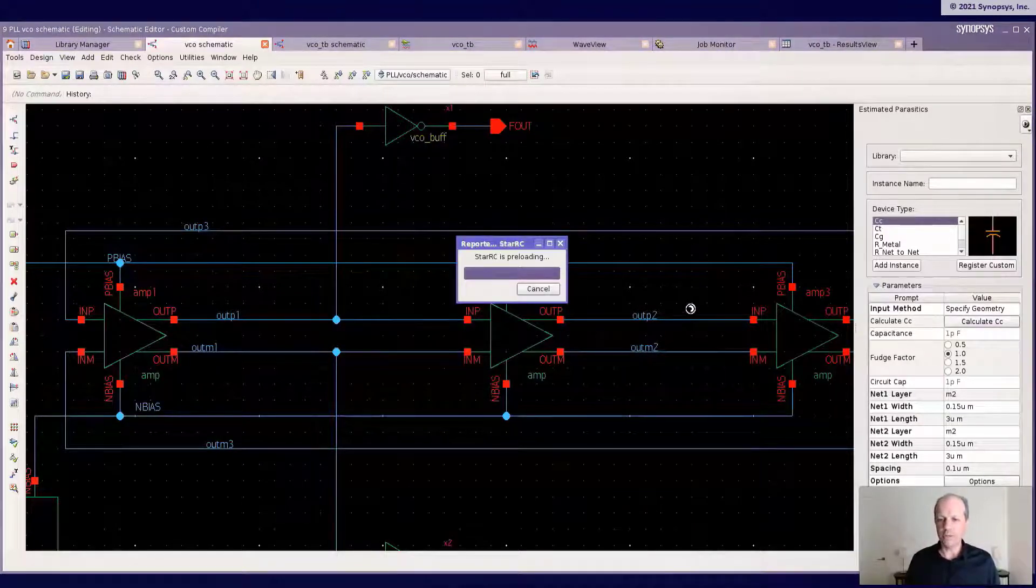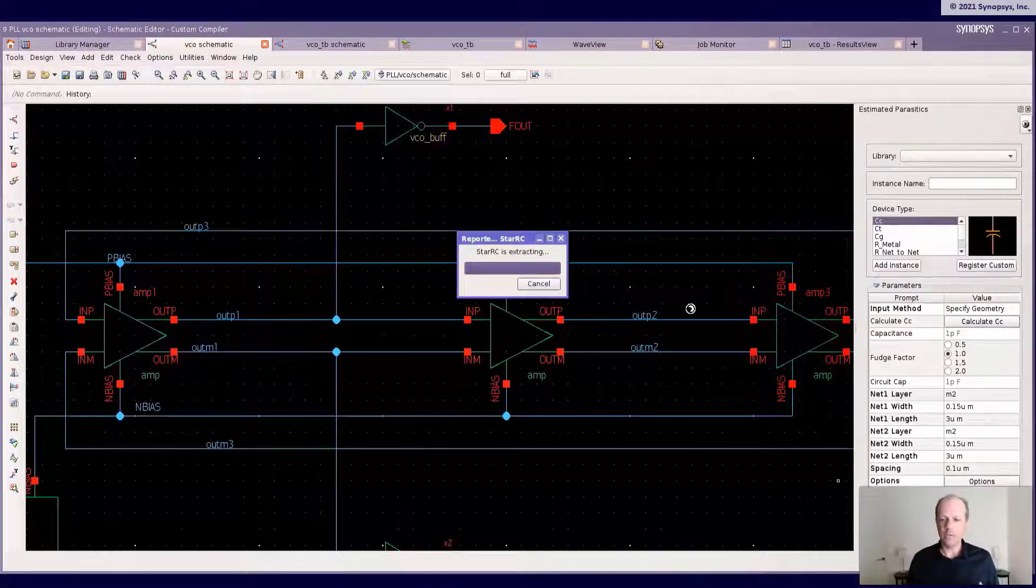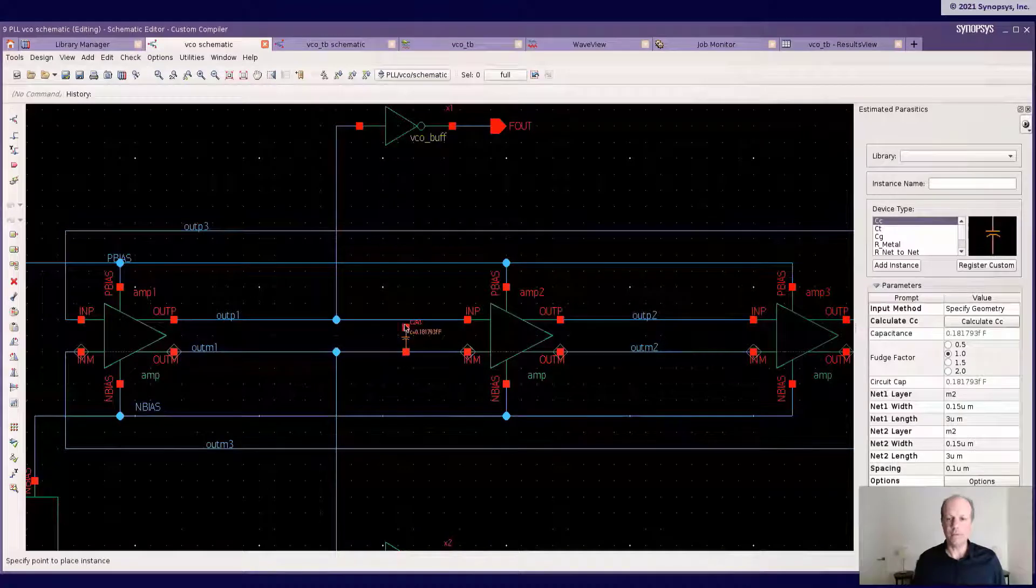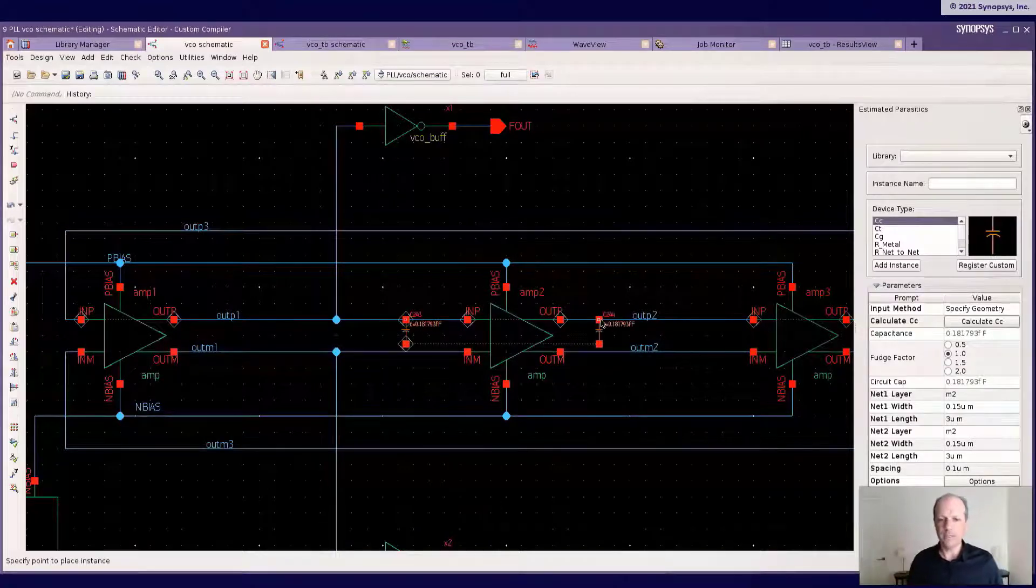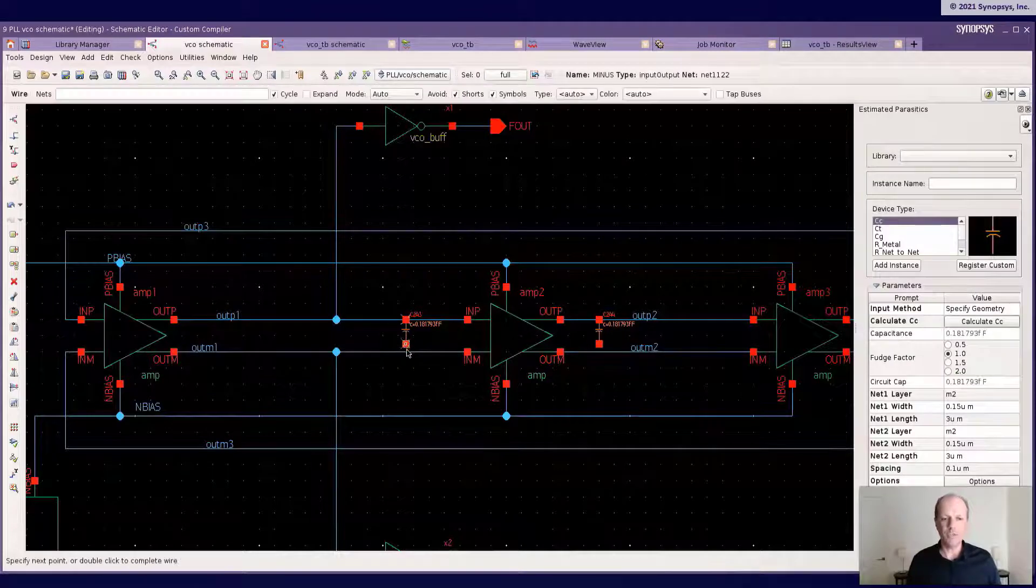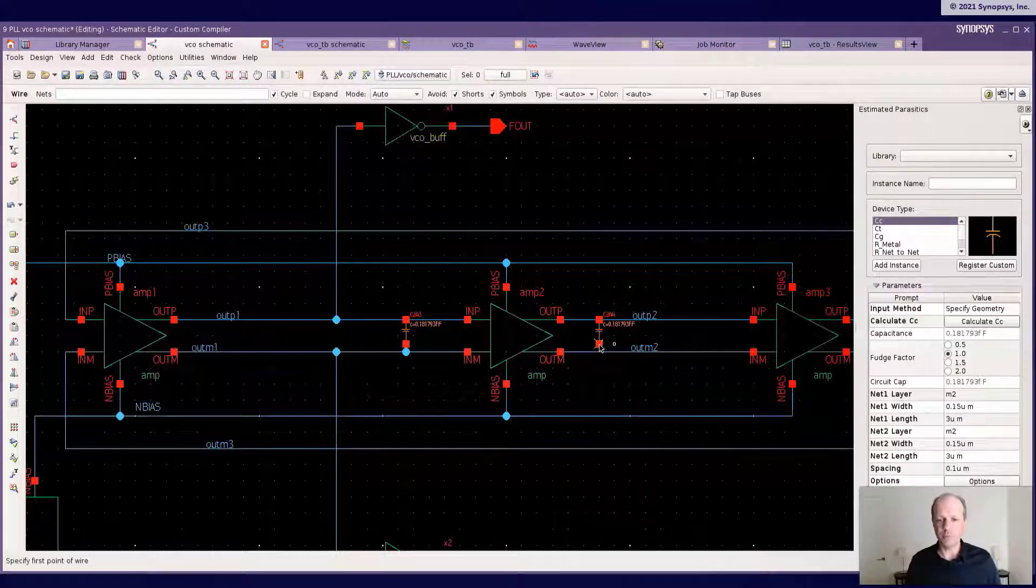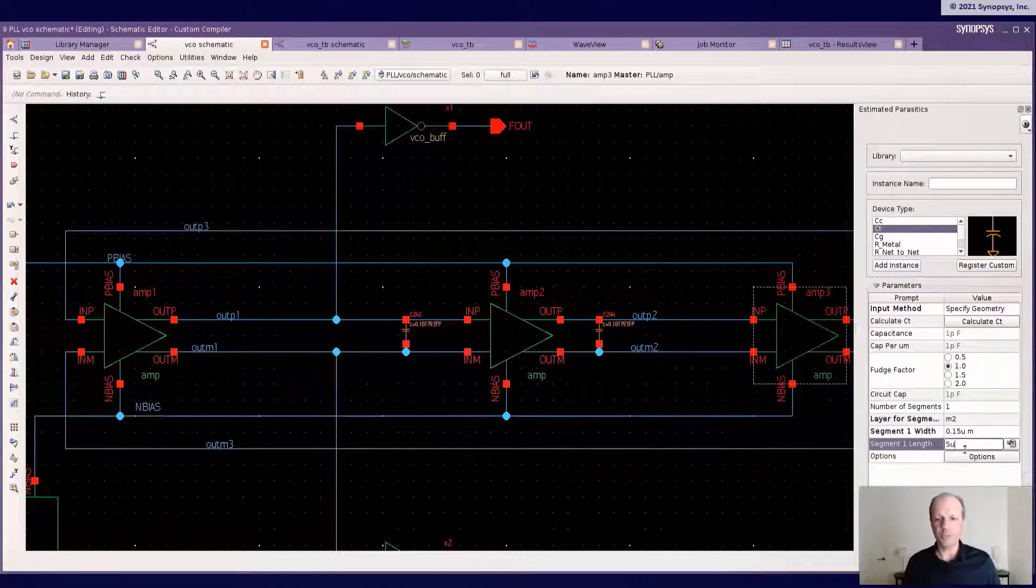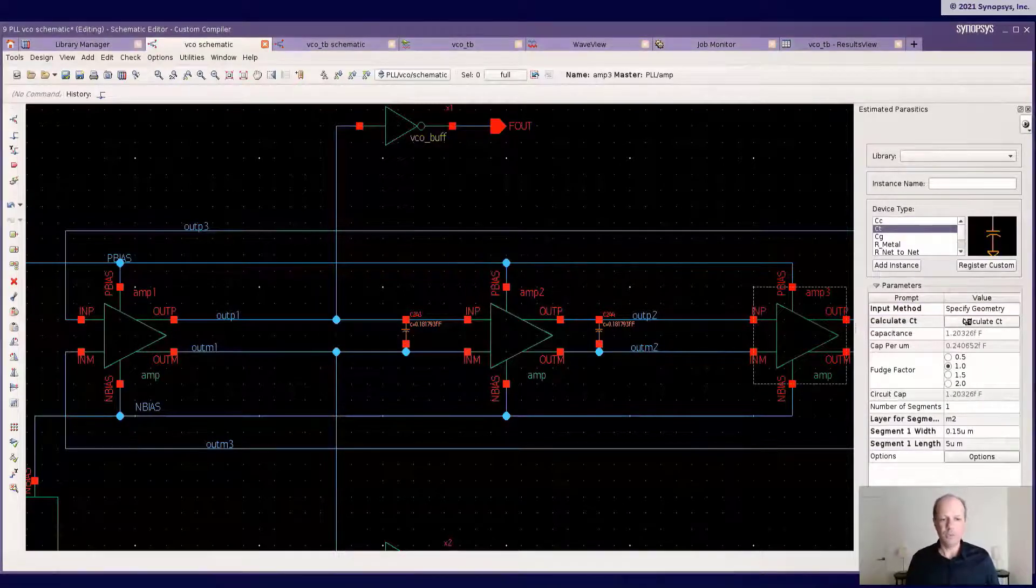As you can see, I'm using the StarRC engine here for the capacitance estimation. So based on this routing specification, layer, number of segments, the width, the length, I'm able to get a calculated value using StarRC engine and the process files from the foundry. So then I will insert those parasitic devices into the schematic.